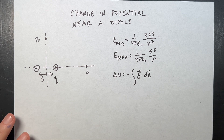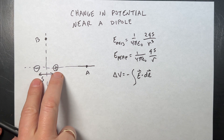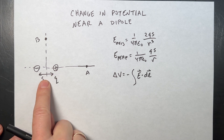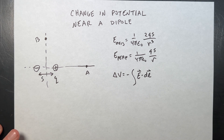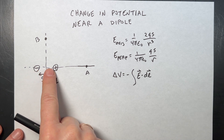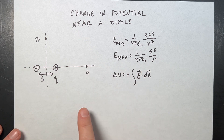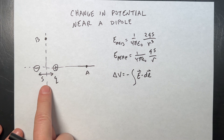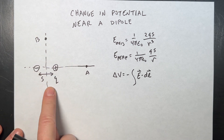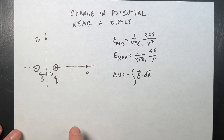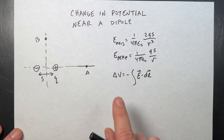A dipole, in case you don't remember, is a collection of two equal and opposite charges separated by distance s. I have videos that derive the magnitude of the electric field along the axis of the dipole and one that derives the electric field magnitude perpendicular to the axis — I'll put links below if you need them.